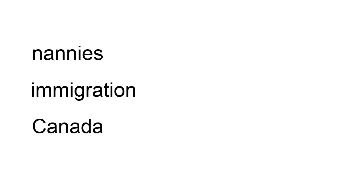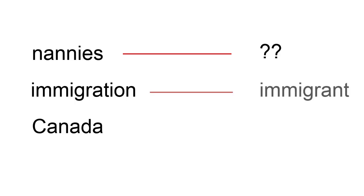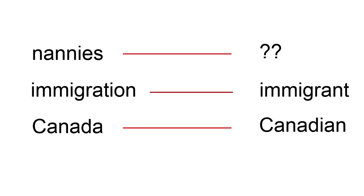Next, try to think of other words that could be used to talk about those concepts. I had trouble coming up with another word for Nanny, but I thought of Immigrants for Immigration and Canadian for Canada. We'll use these alternate terms in our search.